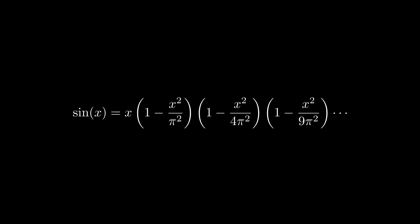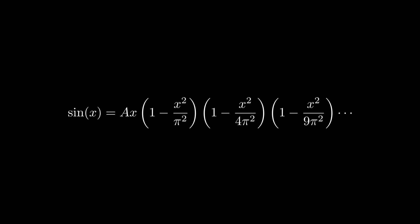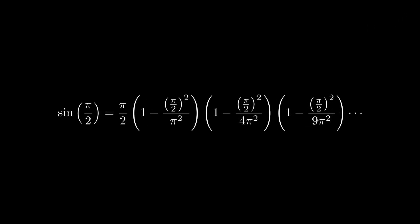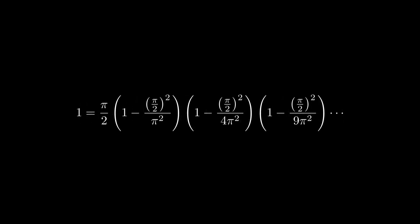Now, for the grand reveal, to derive Wallace's product, we're going to substitute a very specific value for x into this equation: x equals pi over 2. Let's evaluate the left side. Sine of pi over 2 is equal to 1. Now let's simplify each term within the product on the right side.